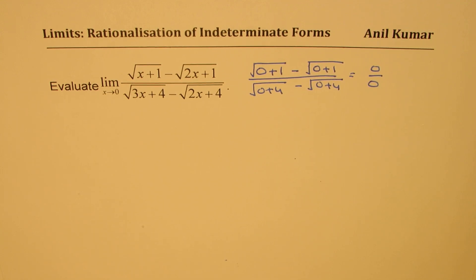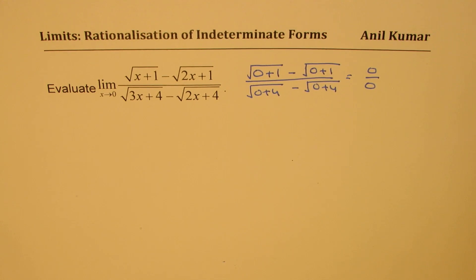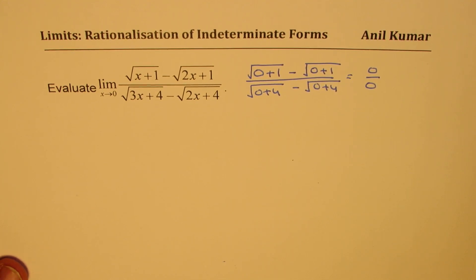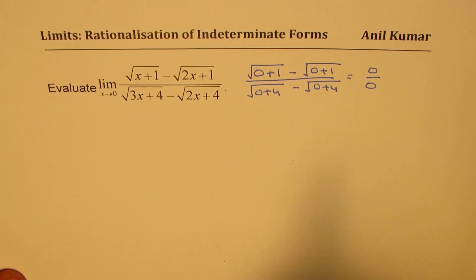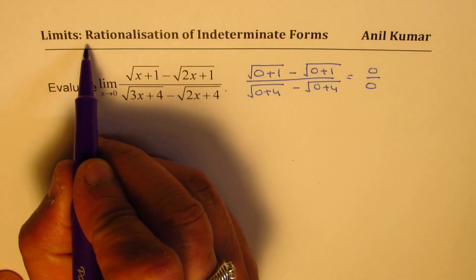You cannot determine the value of this 0 by 0 expression. In such cases, we may have a limit or we may not have a limit — both are possible. Now how do we solve such questions? The strategy here is to rationalize.